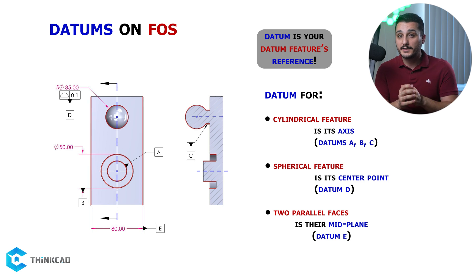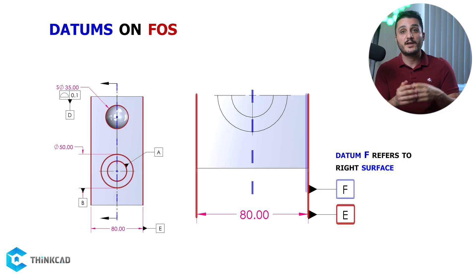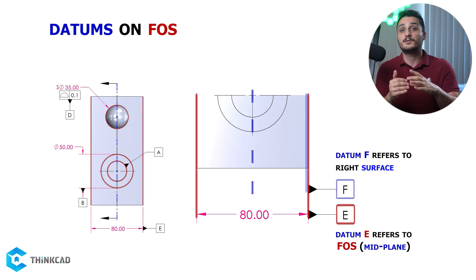Now, to define a mid-plane datum, you need to have your datum letter in line with the dimension that specifies the distance between your two planes. This is really important because if the letter is not in line with the dimension, you're specifying the one surface that you are offset from as your datum and not the mid-plane between the two.